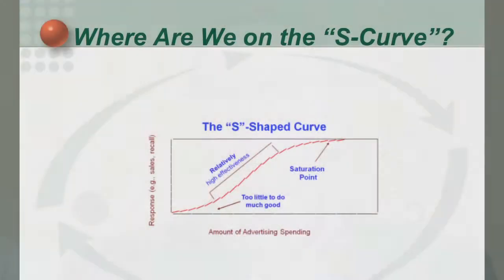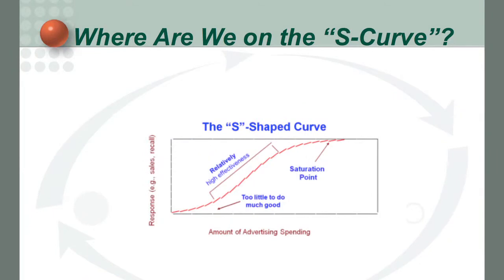Well, we like to look at a range of historical data. If a client can help us understand where they've spent their money, we use a lot of non-parametric tools to try to identify where each media is on the typical theoretical s-curve. And by doing that, we're able to identify where the min and the max is for spending levels of all the different components of the media mix.